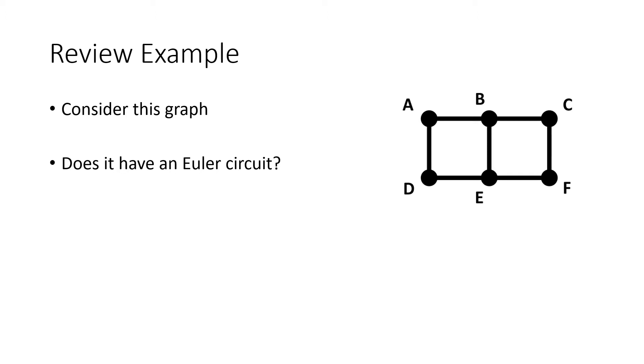So for vertex A, we've got two edges coming into A, that means A has degree 2. For B, we've got three edges coming into B, so B has degree 3. C has degree 2, D has degree 2, E has degree 3, and F has degree 2.